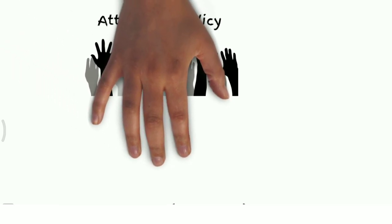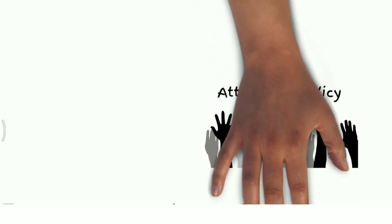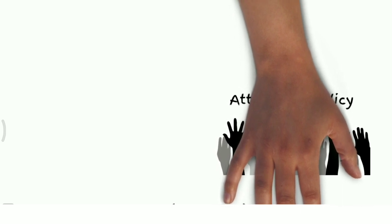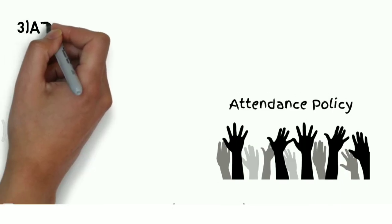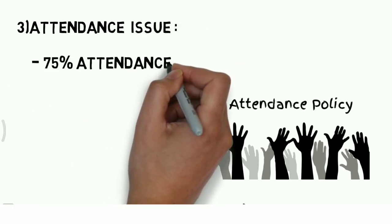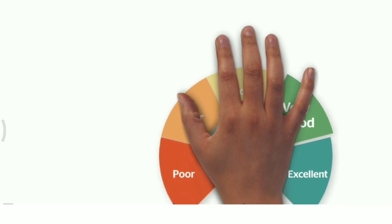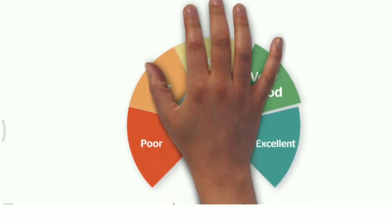The next rule is the attendance rule. The 75% attendance policy has been there since the start of the engineering course, but now this has been changed — specifically, the 75% attendance is made strictly compulsory. There are many cases of fake attendance, proxies, and altering of official systems, but all these malpractices will be stopped as attendance will now be strictly followed and noted.